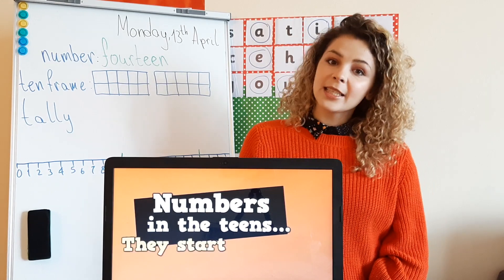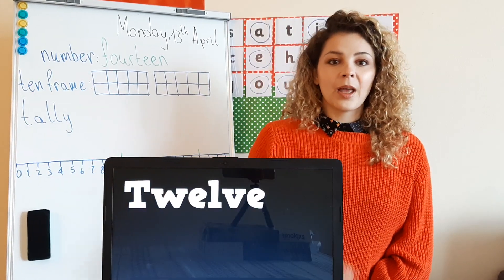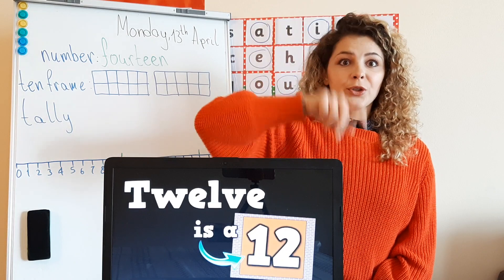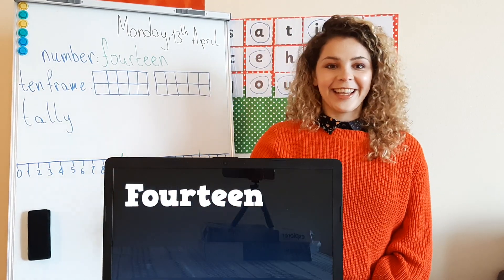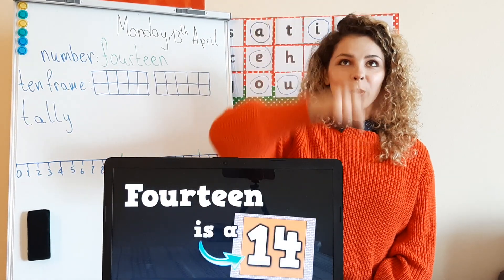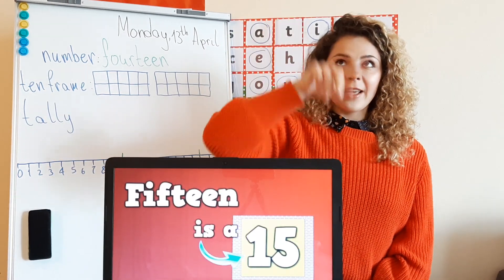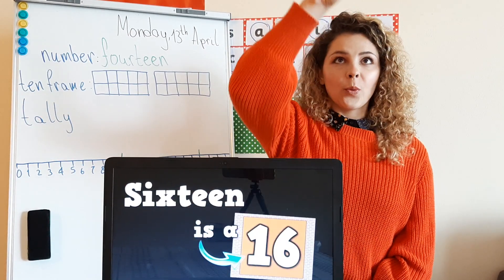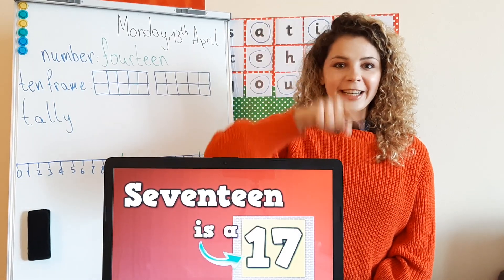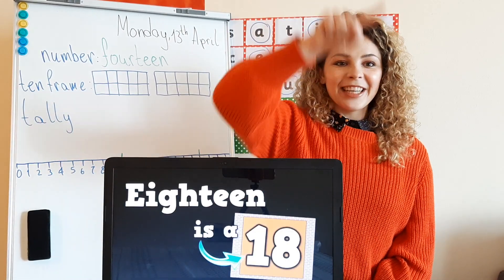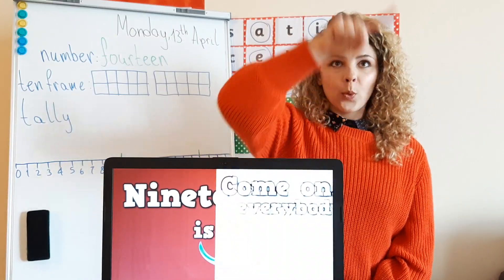Numbers in the teens, they start with the 1. 11 is a 1 and a 1. 12 is a 1 and a 2. 13 is a 1 and a 3. 14 is a 1 and a 4. 15 is a 1 and a 5. 16 is a 1 and a 6. 17 is a 1 and a 7. 18 is a 1 and an 8. 19 is a 1 and a 9.